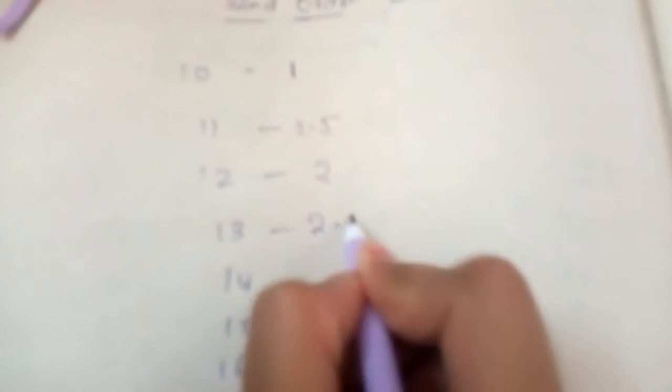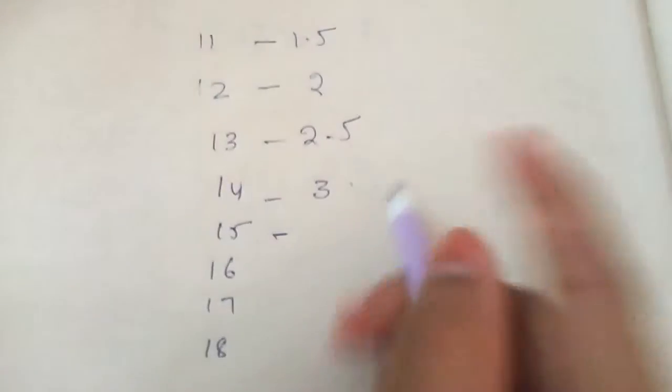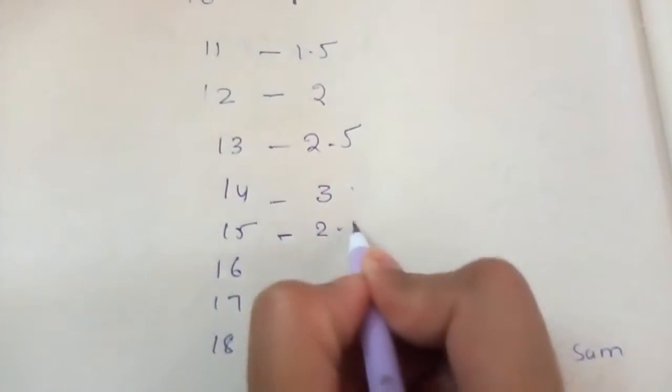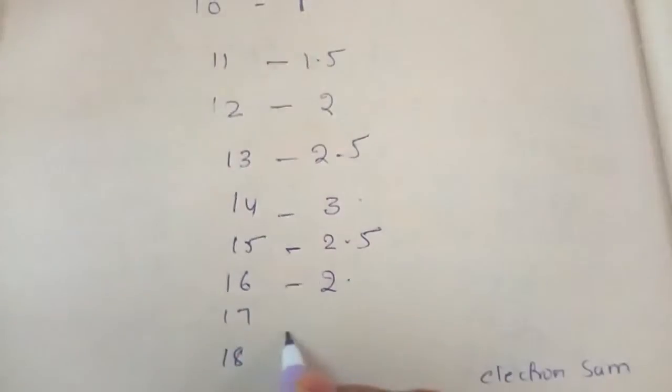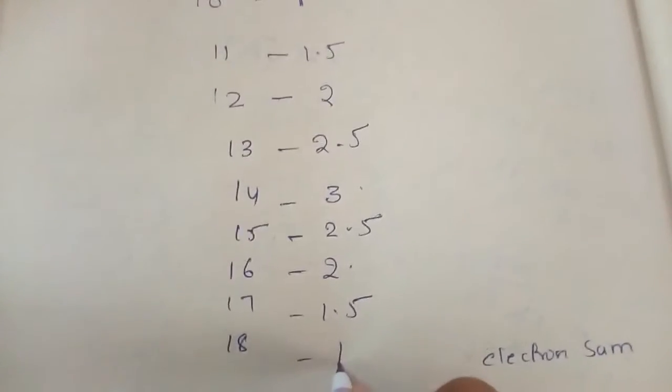Next, 10, 11 is 1.5, 12 is 2, 13 is 2.5, 14 is 3. And next, 15 is 2.5, 16 is 2, 17 is 1.5, and then 18 is 1. Ok.